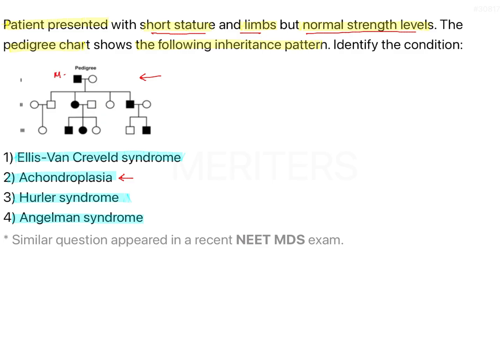Let's interpret the given pedigree chart. Here, the male is affected and the female is not affected. They have four offspring with a 50% affected rate — one circle and one square are colored, meaning 50% of offspring are affected.